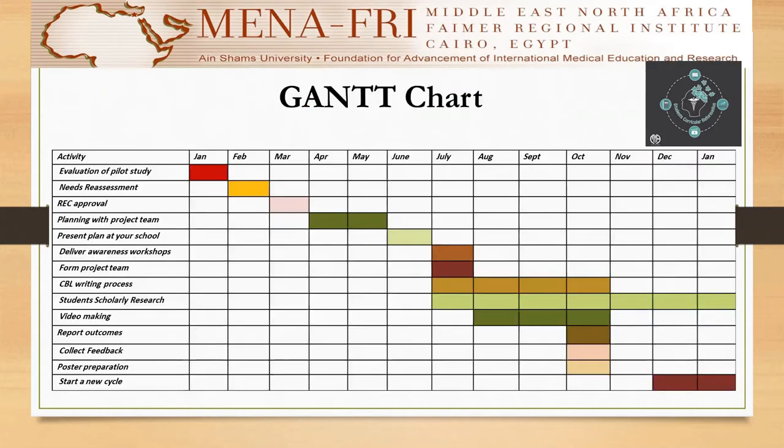This is our Gantt chart for this summer. We did evaluation for the previous pilot study in January. Needs assessments were collected in February, REC approval in March. We planned for the project teams in April and May, and presented the plan to our school staff members to be engaged in this process.